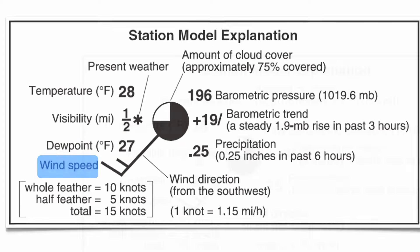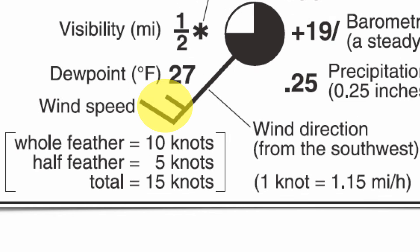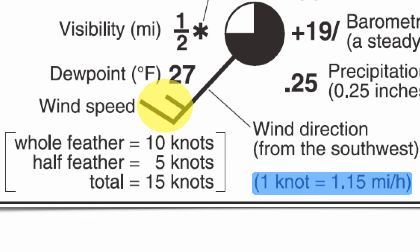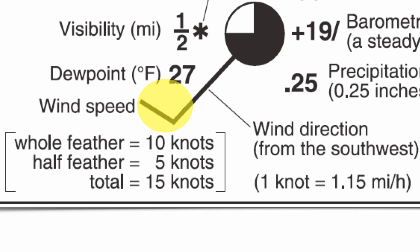Next up is going to be your wind speed. Wind speed is indicated by what we call feathers — those little tabs coming off the bar extending out of the station model. A big feather is 10 knots; half a feather is 5 knots. You add them up, and in this example you have a total of 15 knots. A knot is just another unit to measure wind speed, very similar to a mile per hour. Now here's the problem: sometimes you'll only have one line and it's hard to decipher whether it's a long or short feather. If the feather is at the very end of the arrow, that's a 10-knot wind. If that line is indented any degree, that's a 5-knot wind, so it's very important to know the difference.